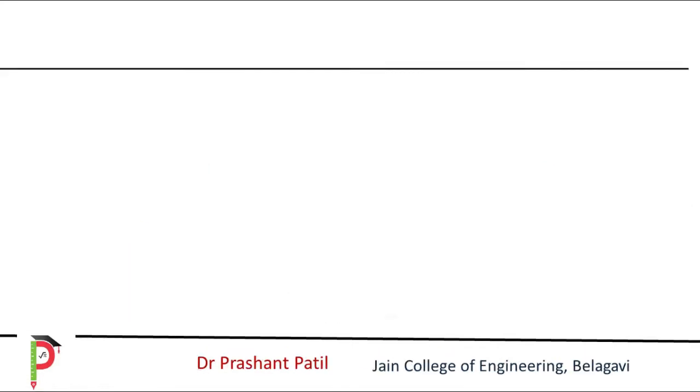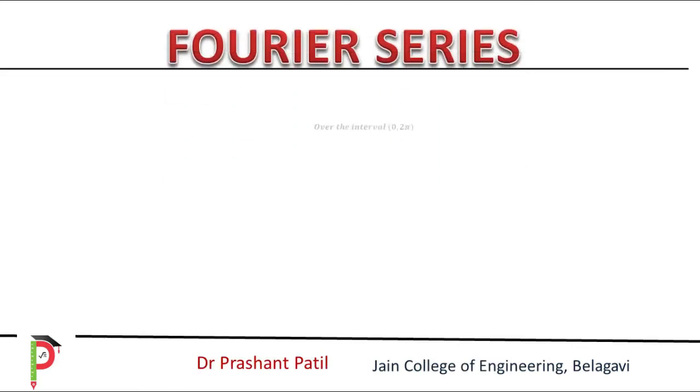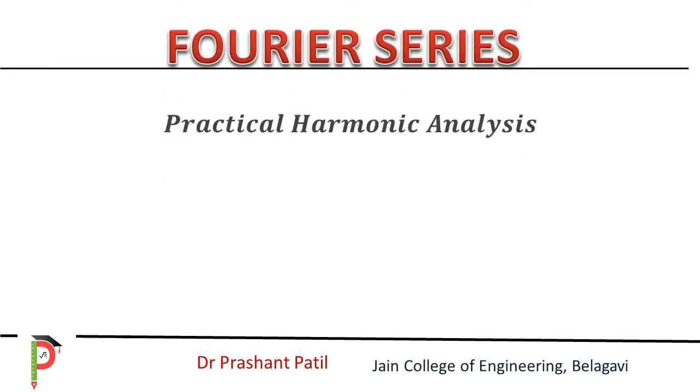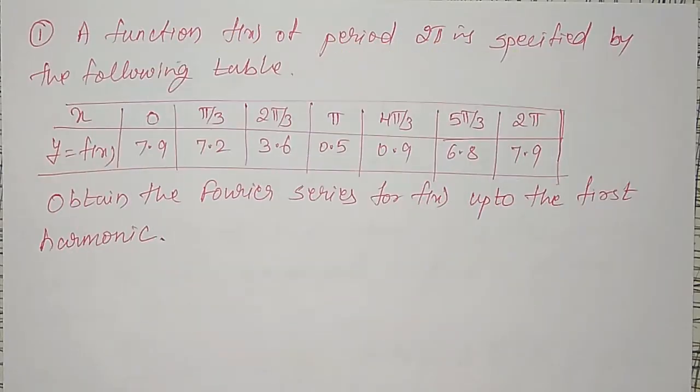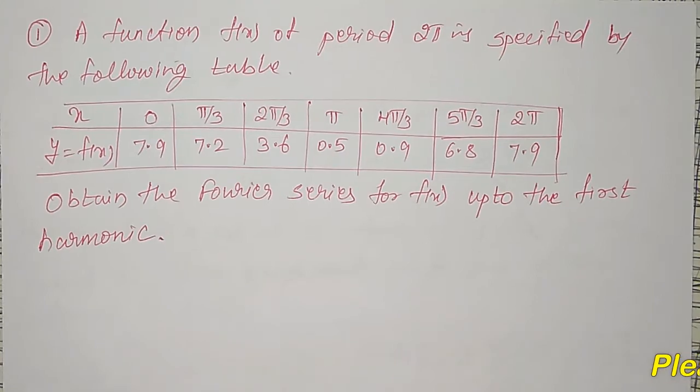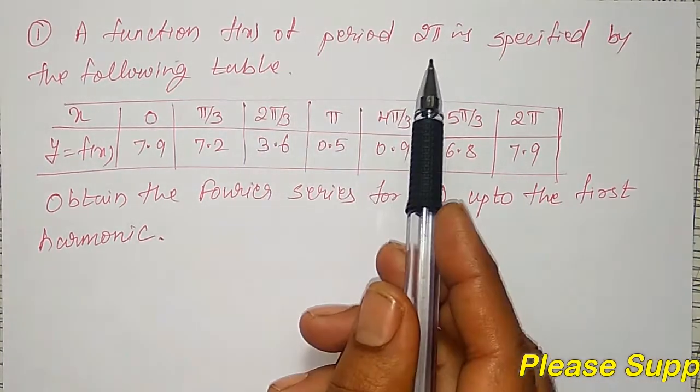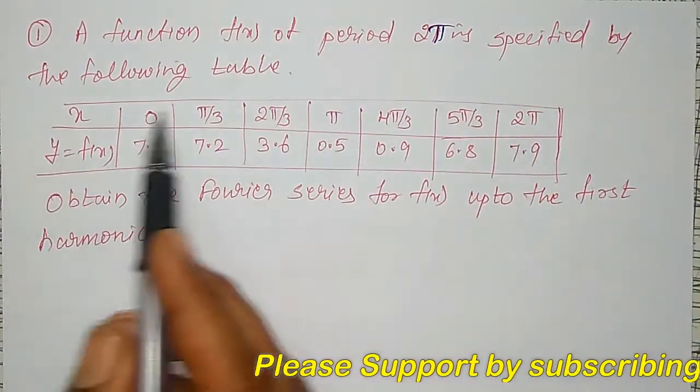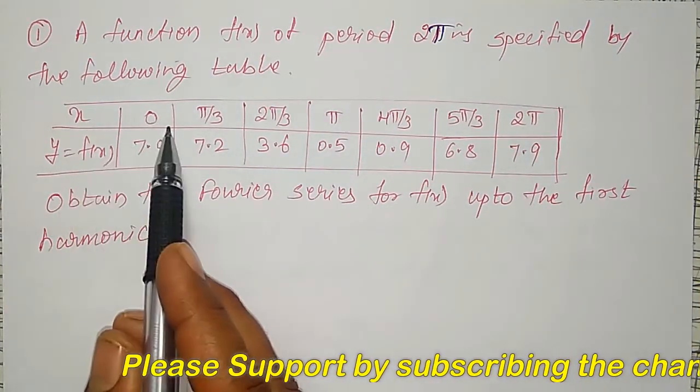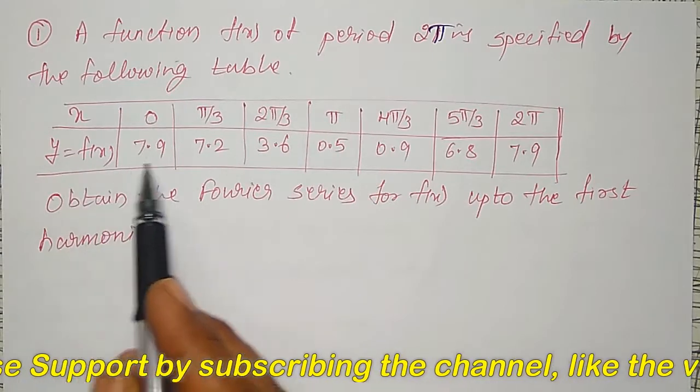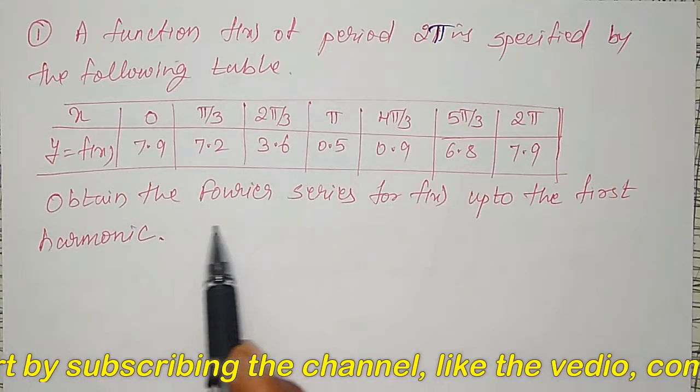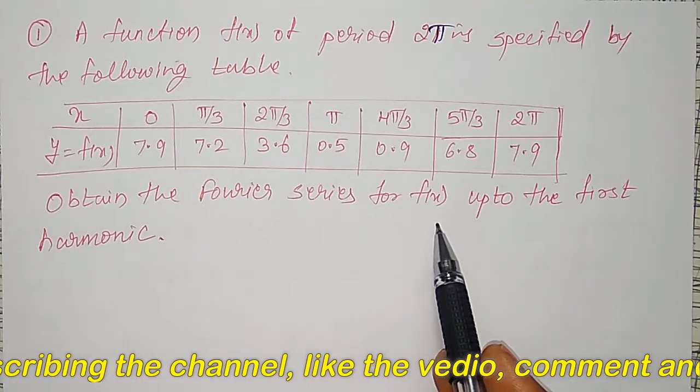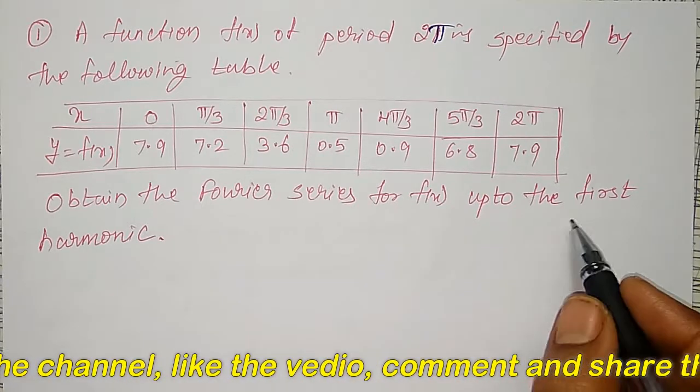In this video, I am going to discuss on Fourier series. I am going to solve one simple example on practical harmonic analysis. A function f of x of period 2π is specified by the following table. x values, equidistant values of x are given, and corresponding y values are also given. Obtain the Fourier series for f(x) up to first harmonic.